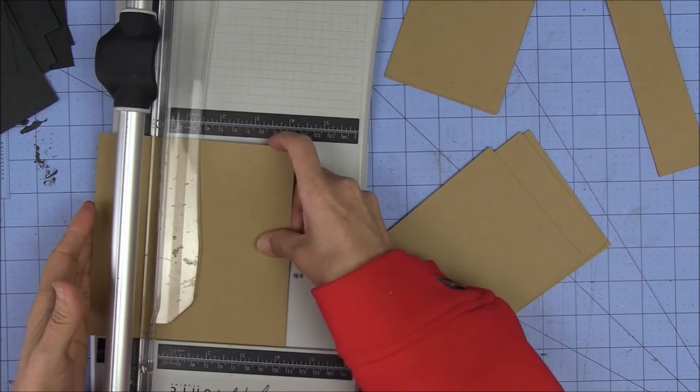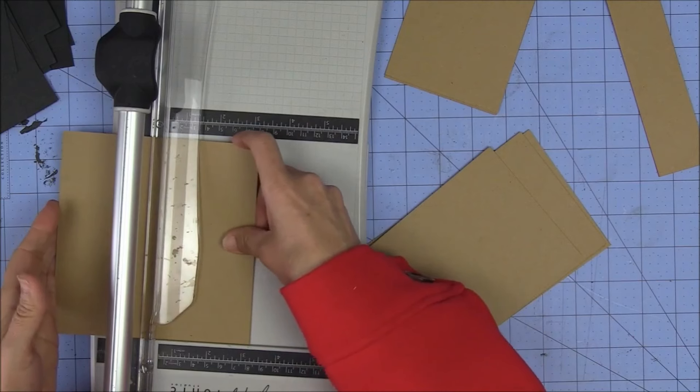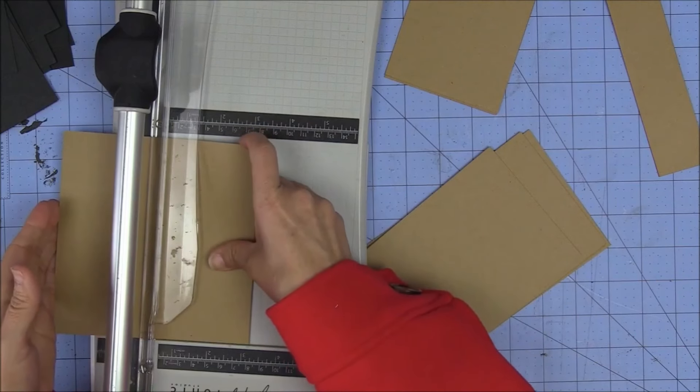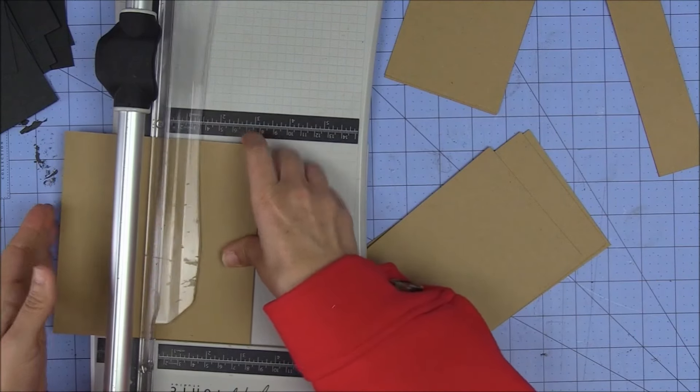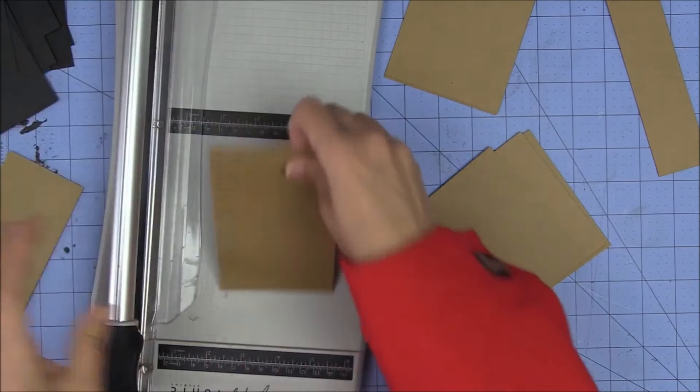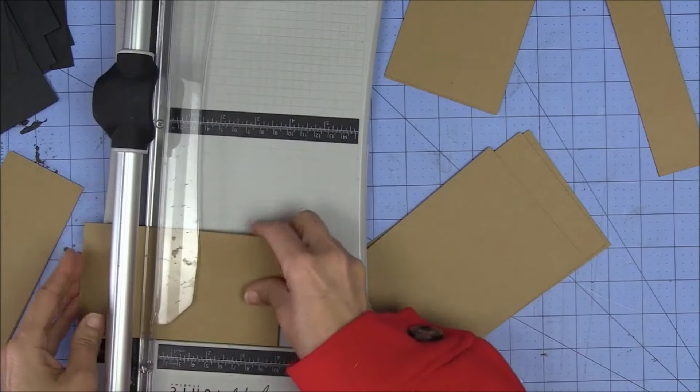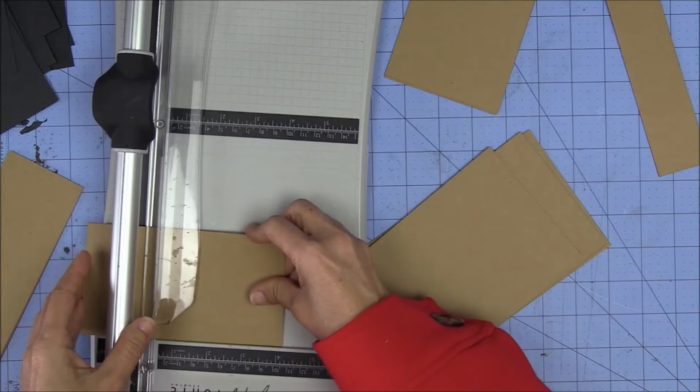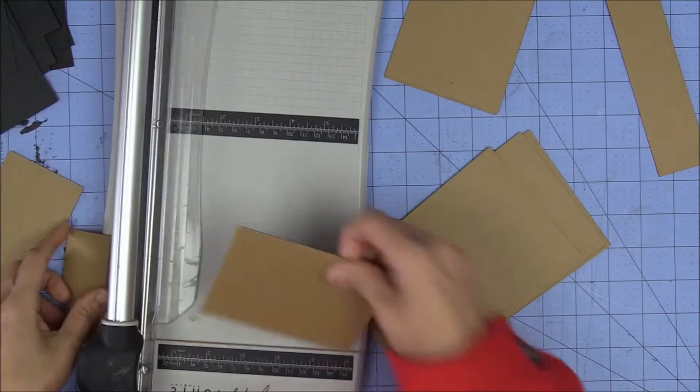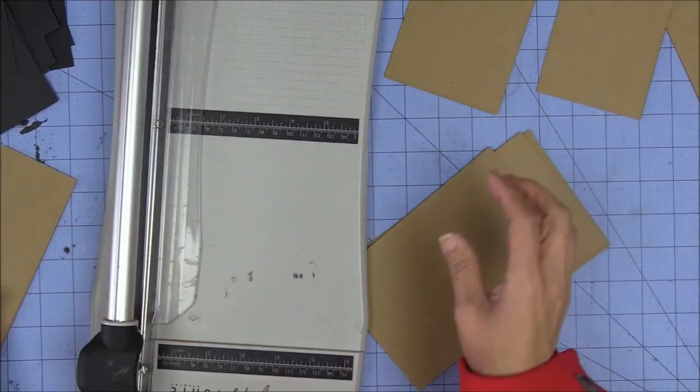Then this piece I cut at 3 and a quarter by 4 and a quarter. Or 4 and a quarter by 4 and a quarter. It all depends on the size of photomat that I want. And I'm thinking I want 3 by 4s. Okay?